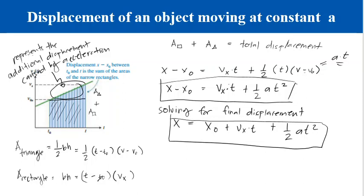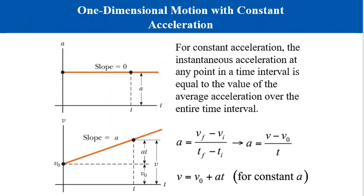On the previous video we discussed the way in which we can derive some equations with an object moving at a constant acceleration. In mechanics, we usually discuss objects that move with a constant acceleration. This type of motion is very important because it applies to many situations, including objects that are in free fall near the Earth's surface when we neglect air resistance.